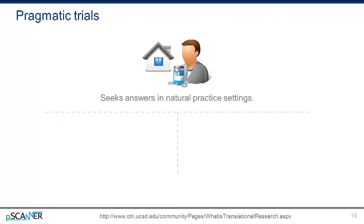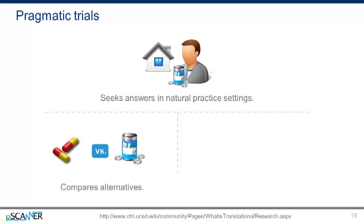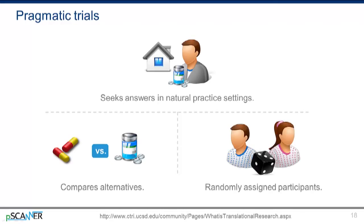Pragmatic trials, on the other hand, discover if a treatment or intervention delivers benefits in natural practice settings. This involves comparing two or more alternatives for addressing prevention, diagnosis, treatment, or management of a disease or symptom. Pragmatic trials may also look at programs for improving the health care system, such as approaches to coordinating care or eliminating barriers that prevent access to health care. Participants may also be randomly assigned in this design. In pragmatic trials, we're often trying to see if the treatment that showed value or efficacy in an RCT also shows effectiveness in a regular practice setting.